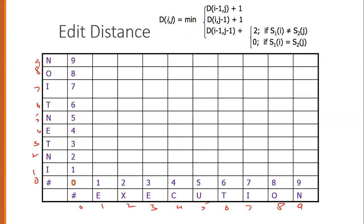The row and column indices go from 0 to 9 for the target 'execution' and 0 to 7 for the source 'intention'.